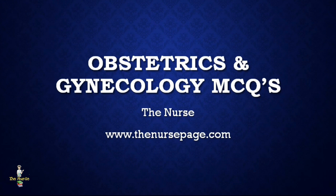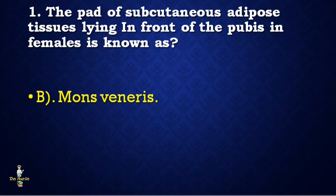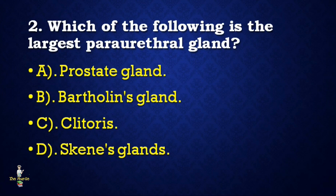First question: The pad of subcutaneous adipose tissue lying in front of the pubes in females is known as — labia majora, mons veneris, clitoris, or labia minora? Correct answer is mons veneris. Mons veneris is also known as mons pubis.